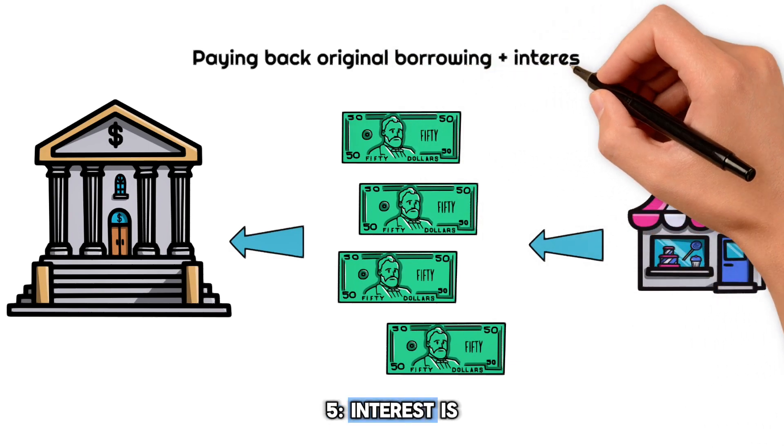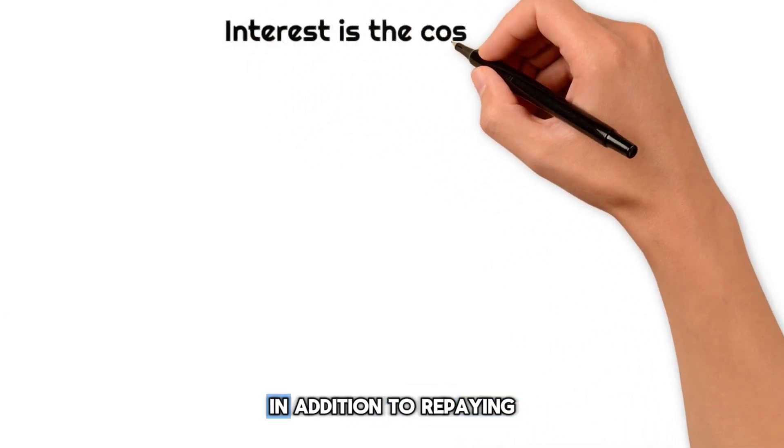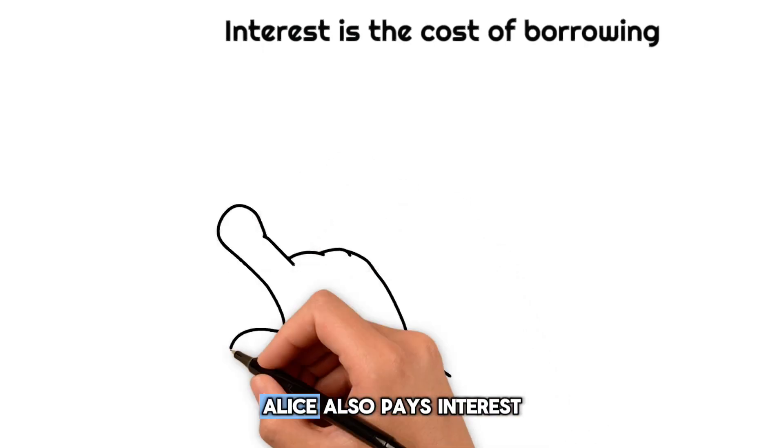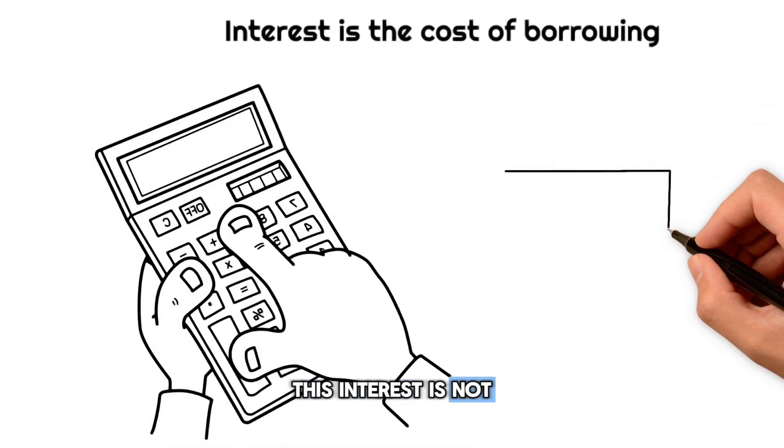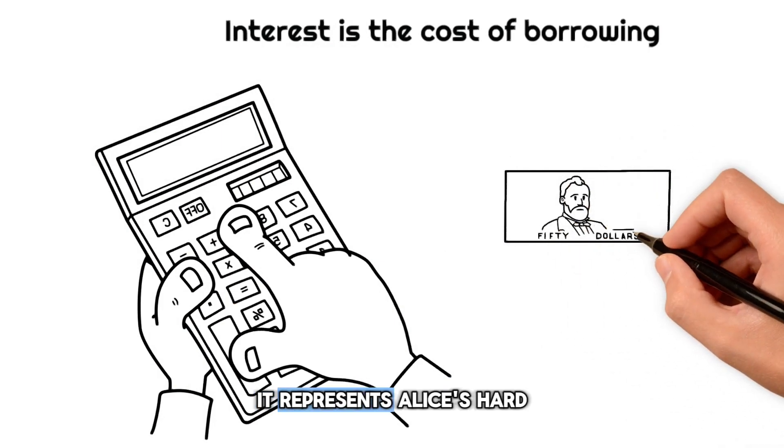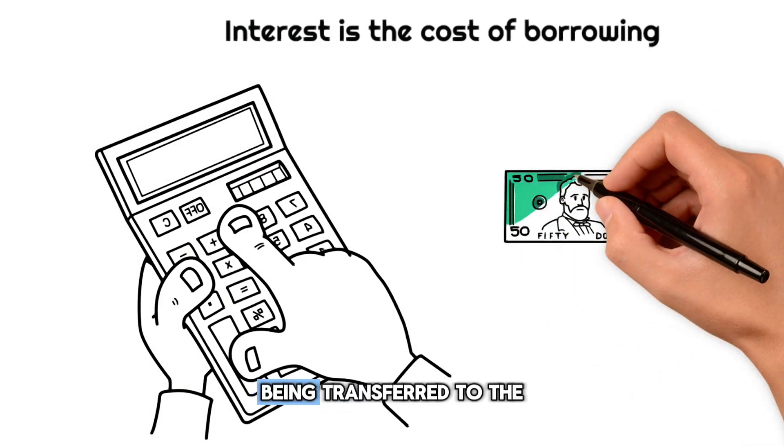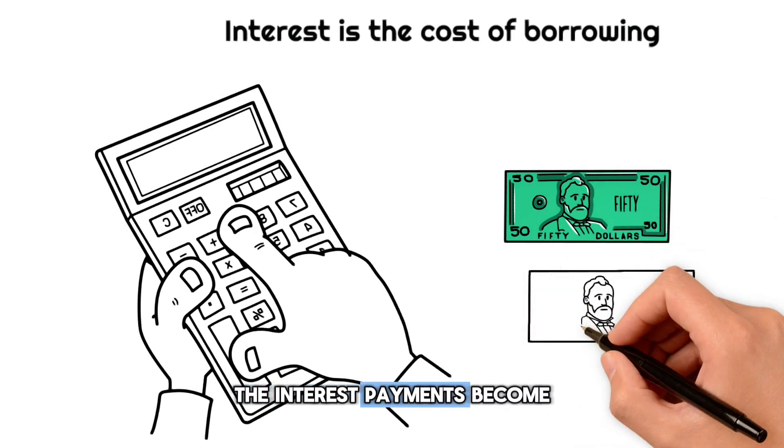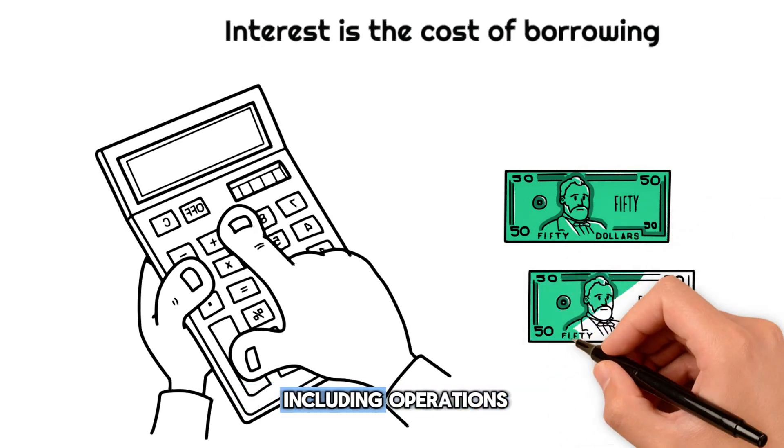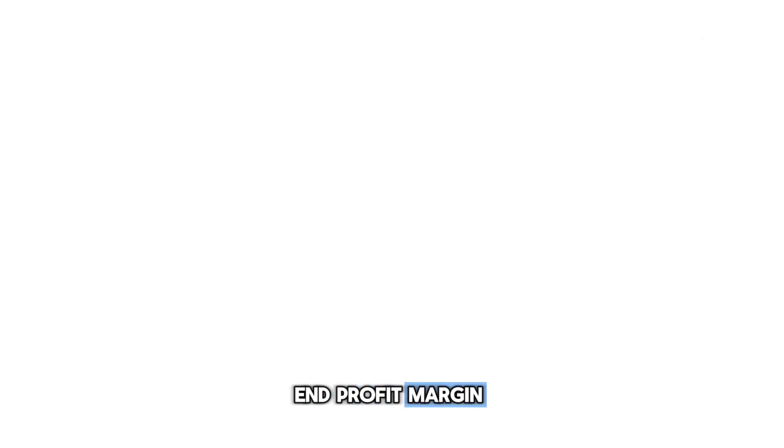5. Interest as Profit. Banks' earnings: in addition to repaying the principal, Alice also pays interest on her loan. This interest is not created when the loan is issued, it represents Alice's hard-earned money being transferred to the bank as the cost of borrowing. The interest payments become the bank's revenue and cover its costs, including operations and profit margin.